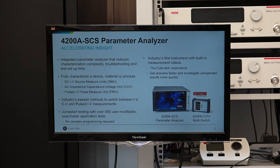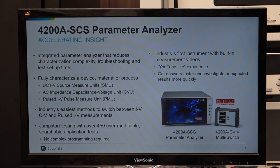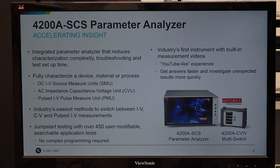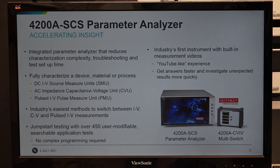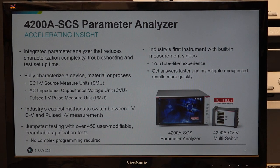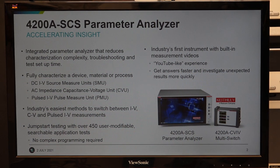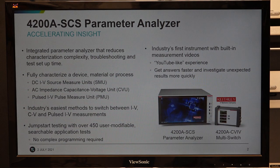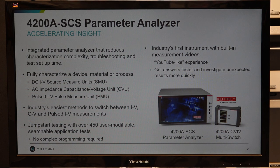To fully characterize a device, material, or process, we need electrical tests like IV measurement, CV measurement, and pulse IV measurement. SMUs are there for various types of IV measurement. CV or AC impedance characterization can be done using hardware called CVU. For various types of pulse measurement, there is an ultra-fast pulse sourcing and measurement option available as hardware in the parametric analyzer.